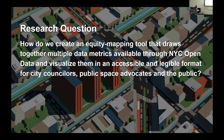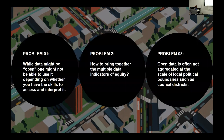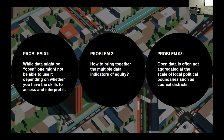We saw three main problems we wanted the tool to address. First, while data might be open, one might not be able to use it — if you go to the New York City open data portal, you might not be able to interpret what that means for your council district or how your council district measures up against others. Second, we wanted to address how to bring multiple open data layers together to create indicators of equity. Third, open data is often not aggregated at the scale of these political boundaries.